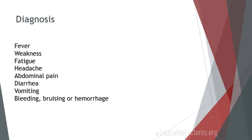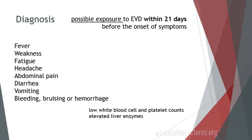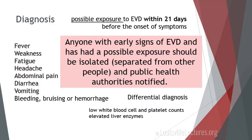A person presenting with symptoms of acute illness — fever, weakness, fatigue — and who has escalated to the point of having low white blood cell counts, low platelets, and elevated transaminases, and has had a possible exposure to Ebola virus disease within 21 days of onset of symptoms, should be isolated — in addition to considering all differential diagnoses. Anyone with early signs and symptoms and a possible exposure should be isolated. These are people we term 'persons under investigation' — they're isolated and public health officials are notified.